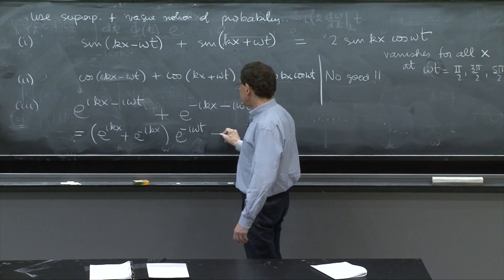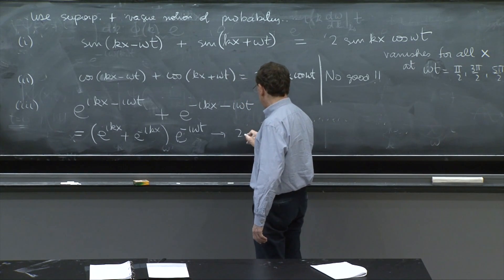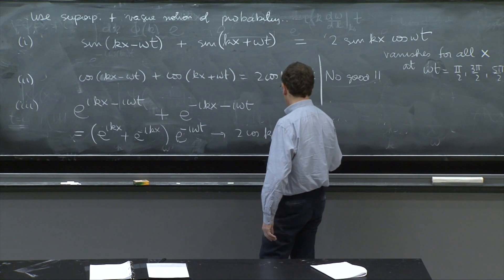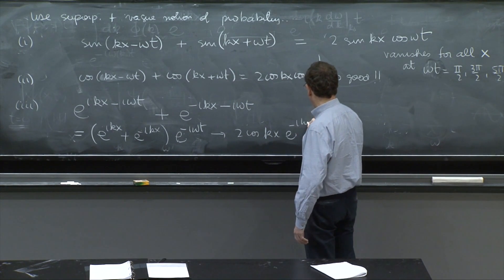and be left with 2 cosine kx, e to the minus i omega t.